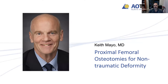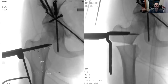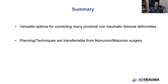Keith Mayo talked about proximal femoral osteotomies for non-traumatic deformity, looking at different types of hip reconstruction including valgus or abduction, adduction plus or minus rotation, neck lengthening, and limb shortening. An example was shown of a patient who had a periacetabular osteotomy that needed revision plus a proximal femoral osteotomy. His points: this isn't just for femoral neck non-unions — people have rotational issues, valgus issues, varus issues. The intertrochanteric osteotomy is very versatile for correcting proximal femur non-traumatic deformities, and planning and techniques can be transferred between non-union, malunion, and reconstruction cases.